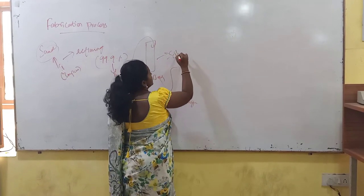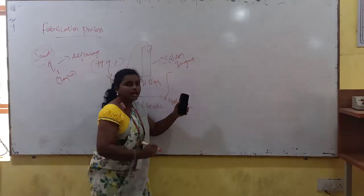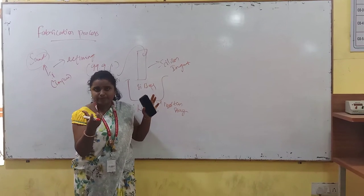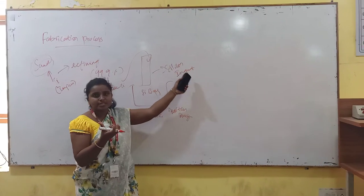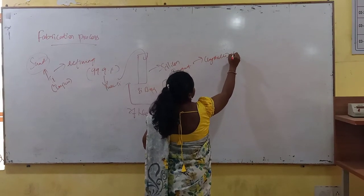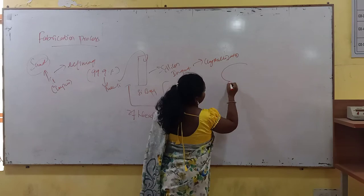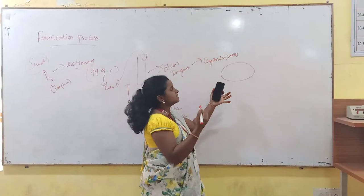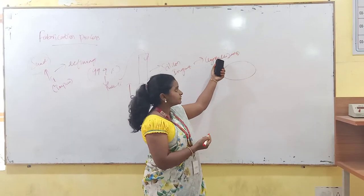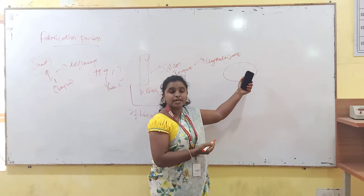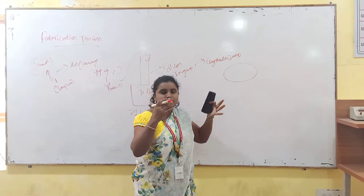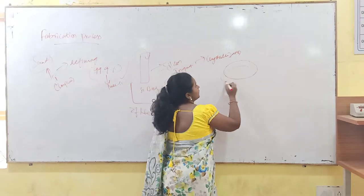We will be calling it the silicon ingot, and for this, we will be doing the crystallization process. After the crystallization process, we will be getting a particular silicon wafer having some diameter, thickness, and size. After this crystallization process, our actual silicon wafer will be formed. Then we are going to divide it into a number of silicon wafers, each with the required thickness and diameter.